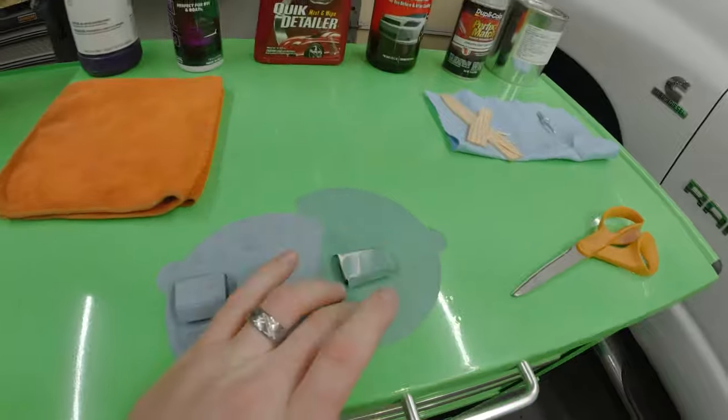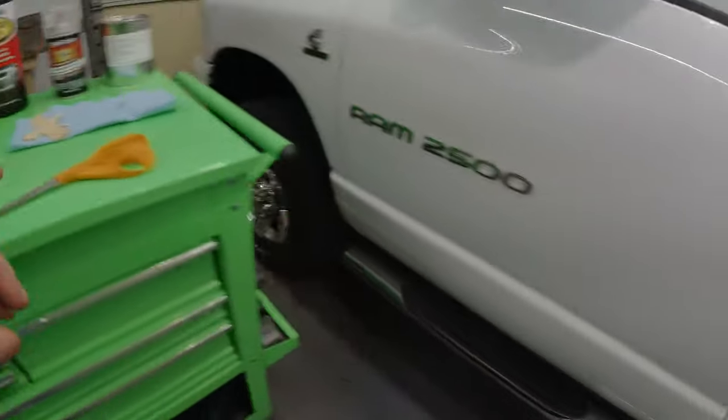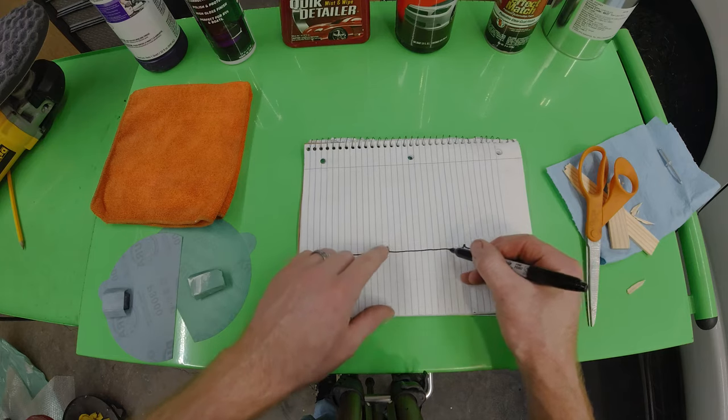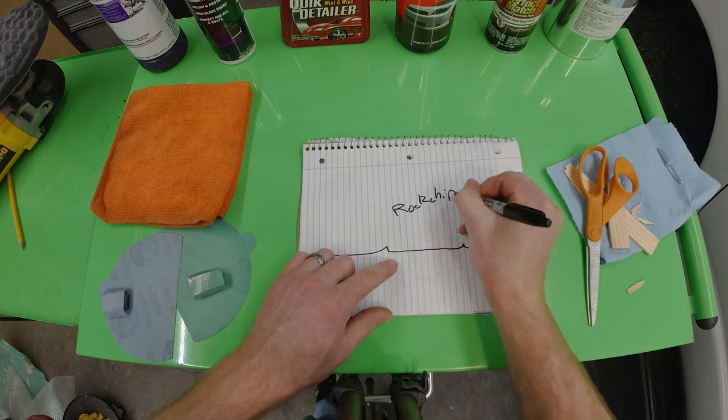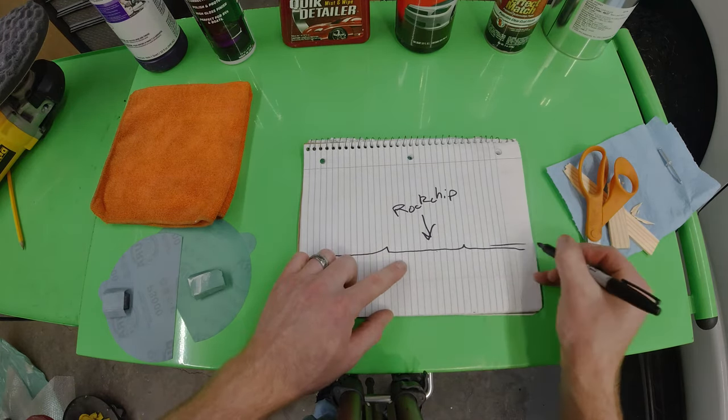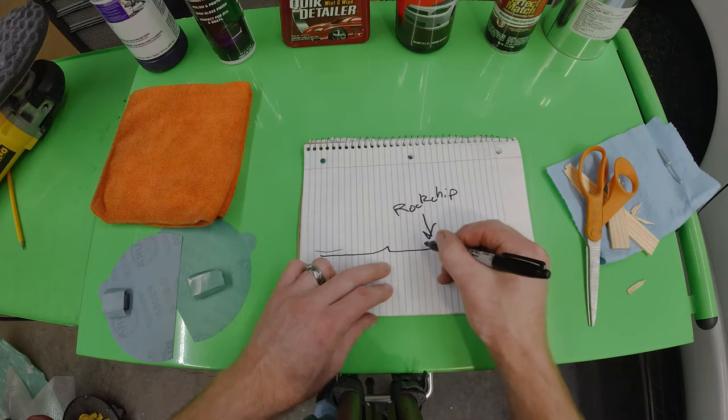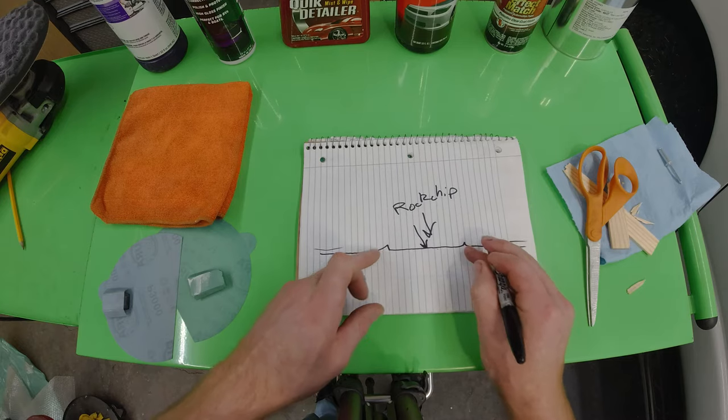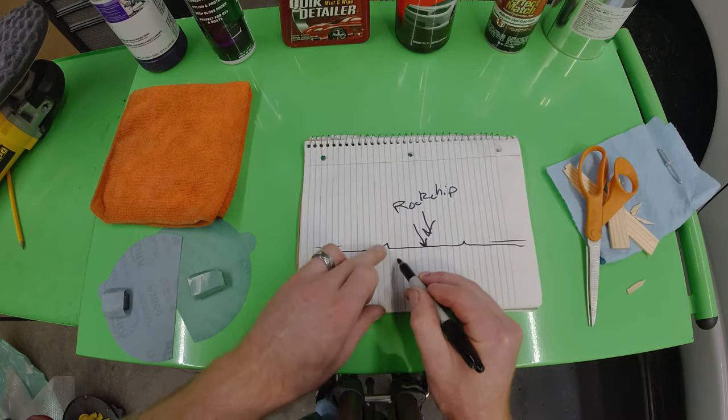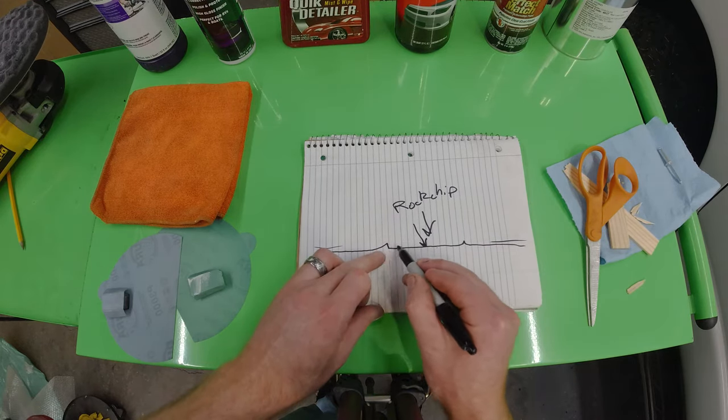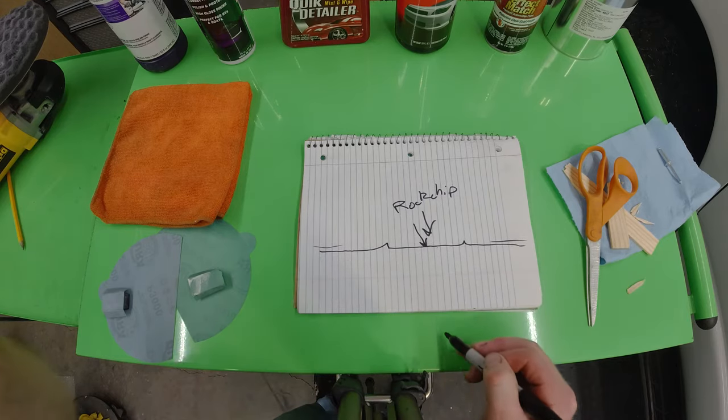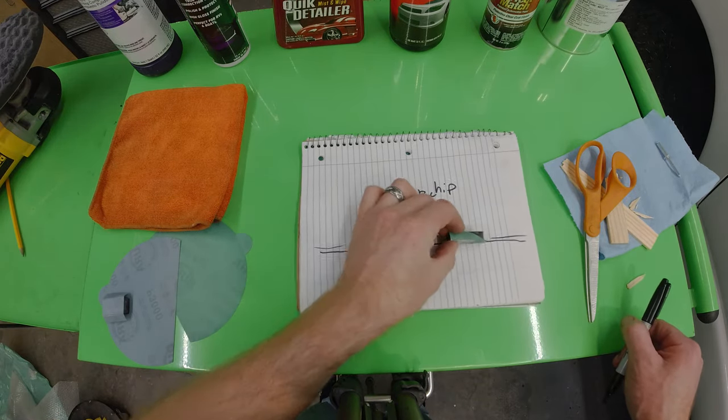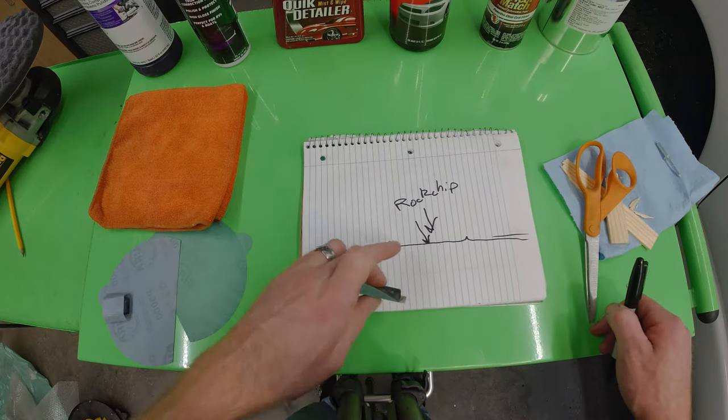First thing we're gonna do is grab our 2,000 grit sandpaper and clean up around the outside of the chip. The paint will be knocked up in the center of the rock chip. This is your normal paint, it's all nice and flat, but when the rock hits this area it kind of pushes the paint up on the edges. You may not be able to see it but you can definitely feel it. When we take the 2,000 grit sandpaper it's gonna knock that ridge down and allow the paint to fill in nice and evenly.